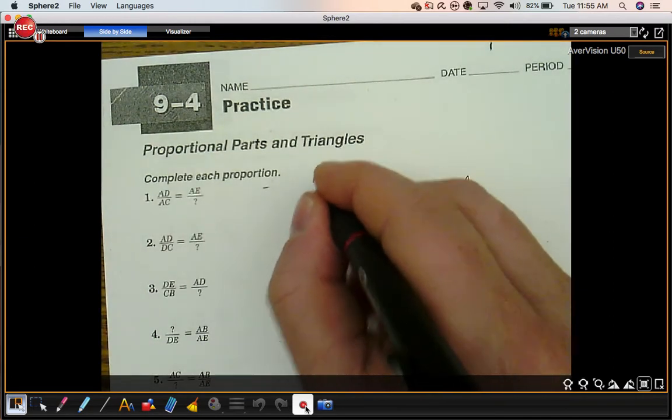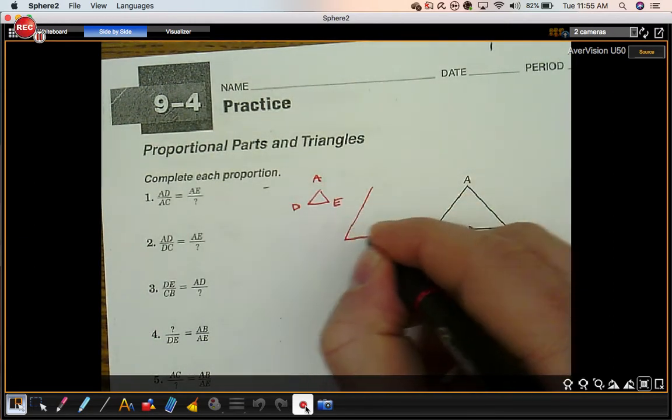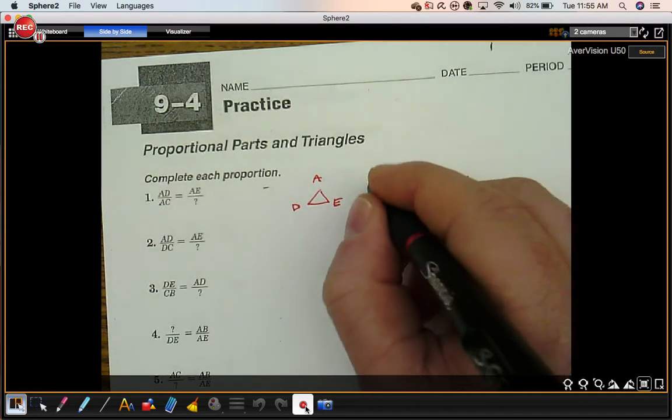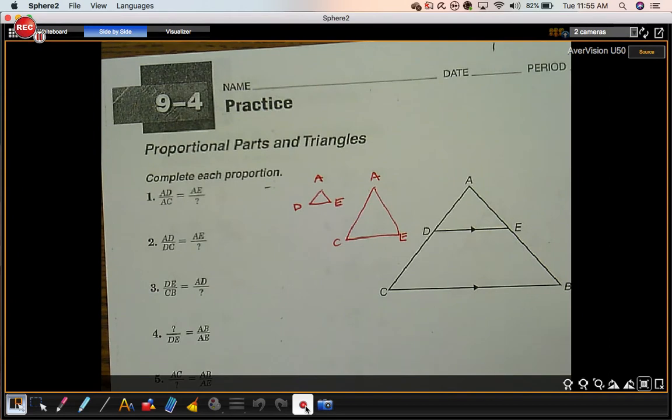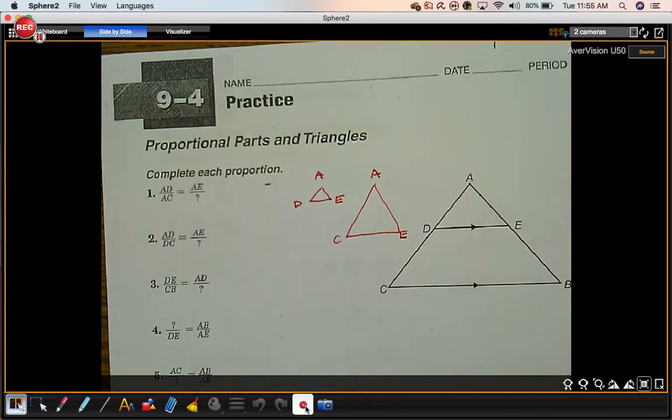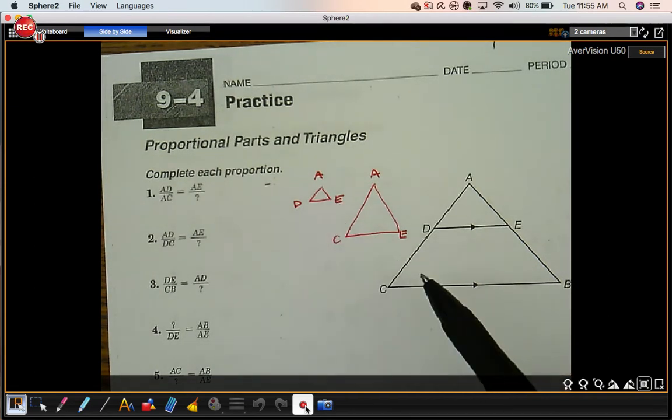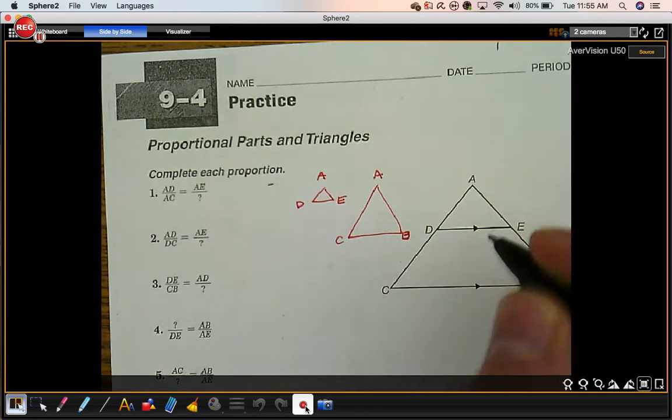Another way to do this would be to redraw the triangles. In the last video we looked at one strategy. This would be another one. Segment AD corresponds with segment AC. That's going to be equal to segment AE over segment AB.